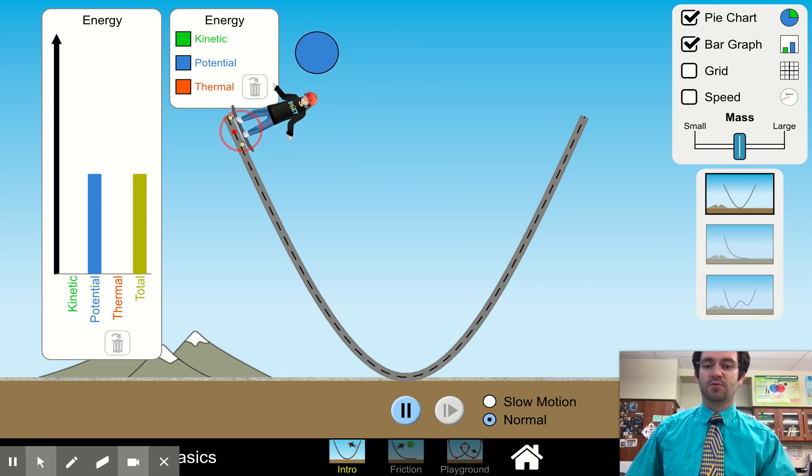So you're going to drag the skateboarder to the top and just let her swing back and forth. And your job is to record what the bar graphs look like at the bottom and then at the top and then answer a question about what happens in between.